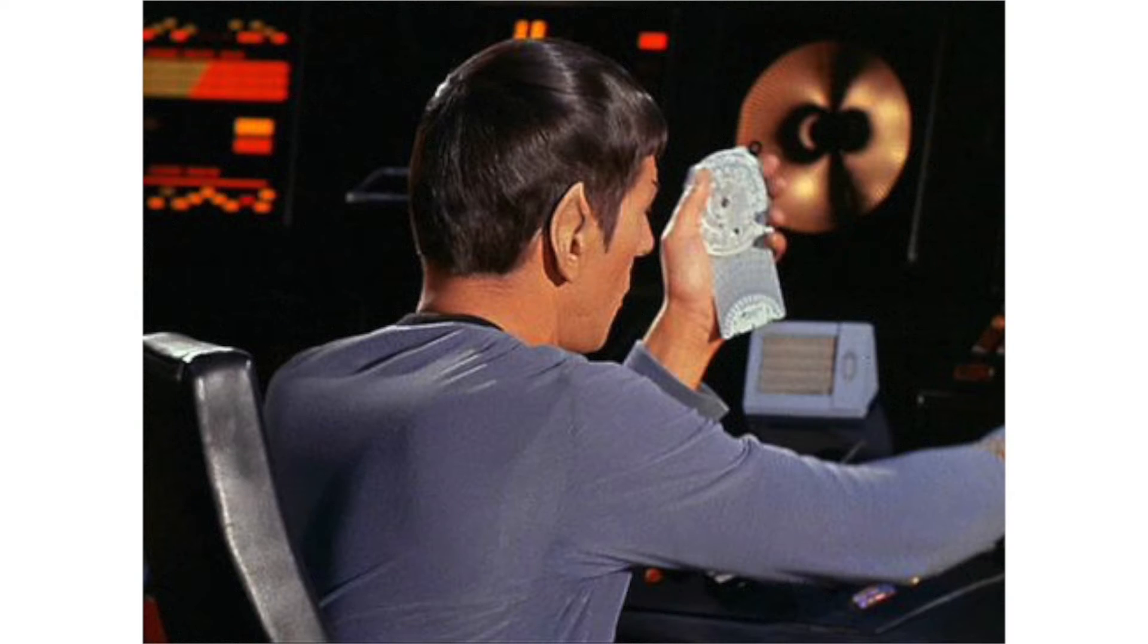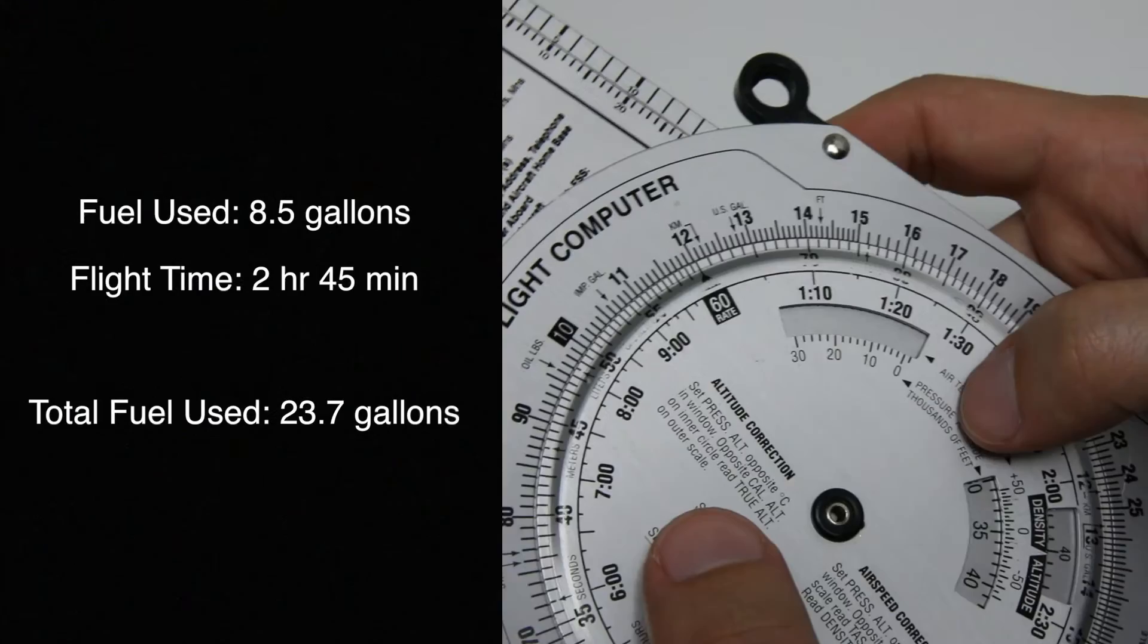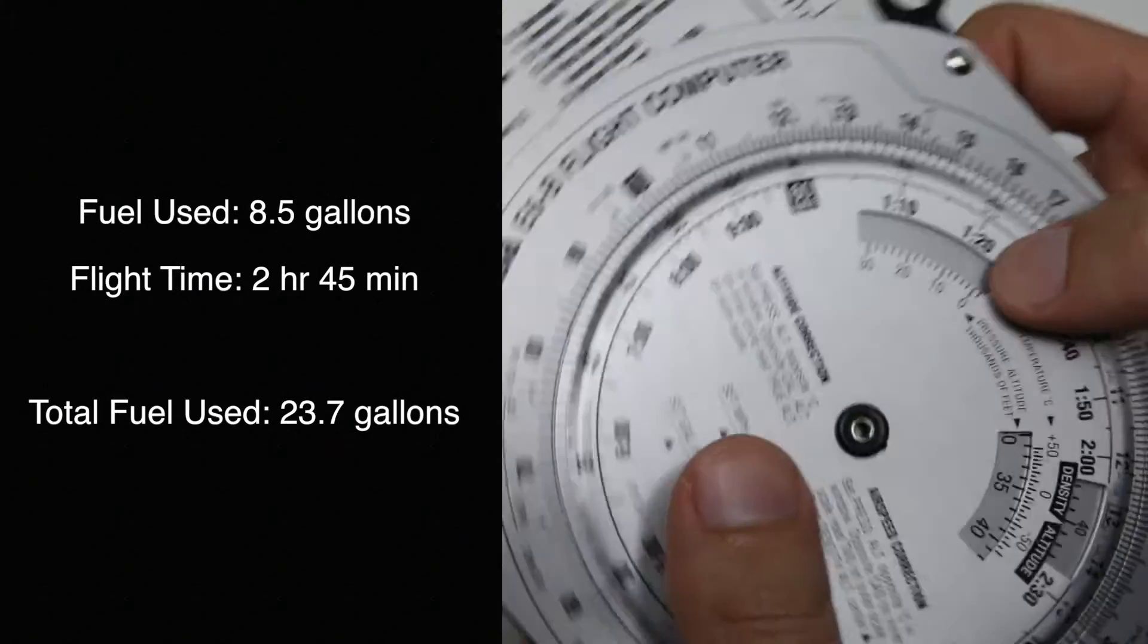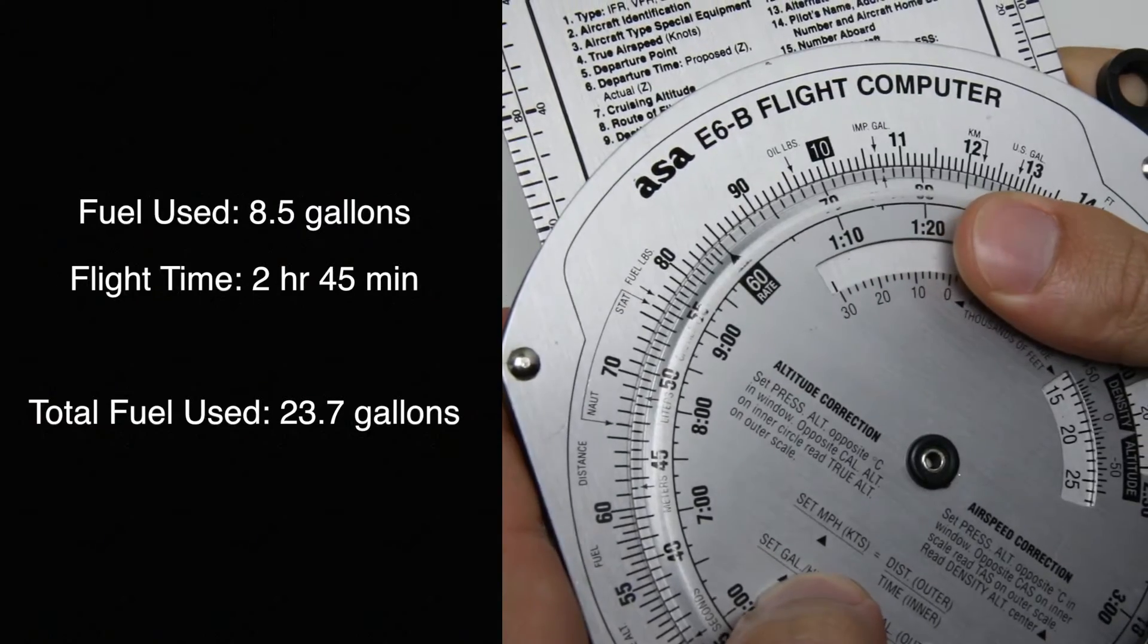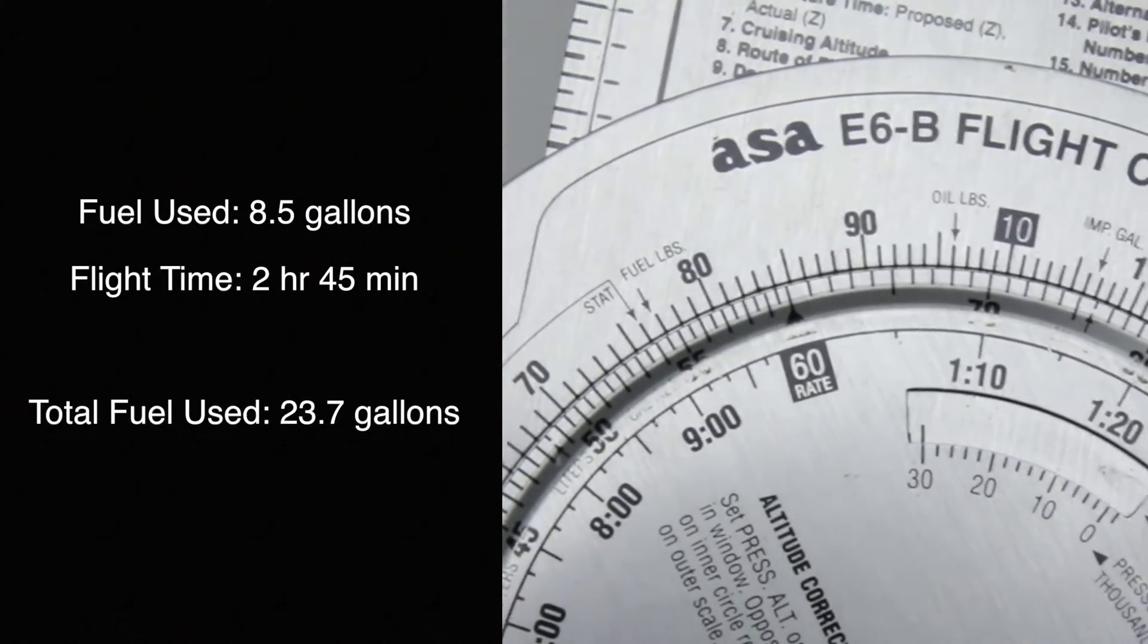Another example: we're going to burn 8.5 gallons per hour, so we have to set the rate to 8.5 gallons per hour right about there.